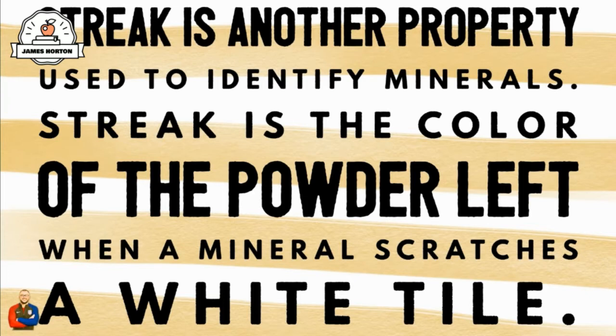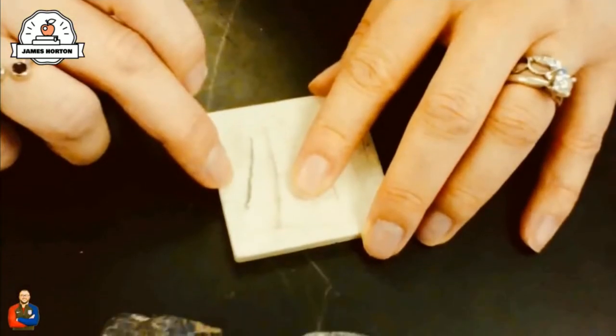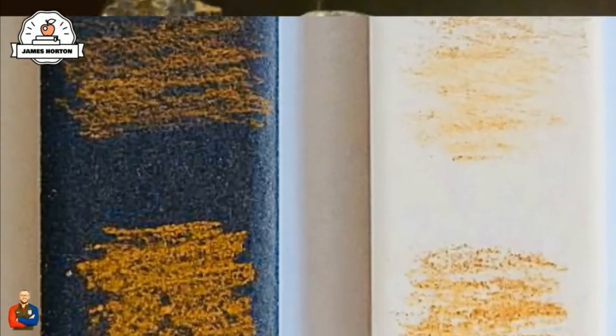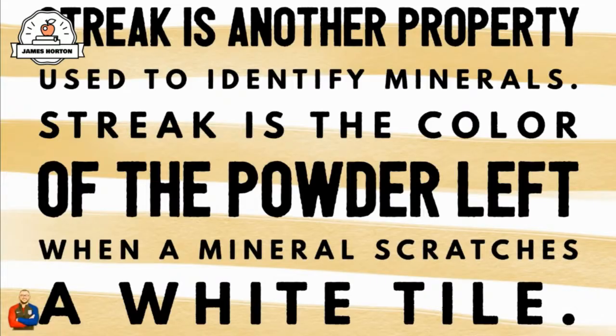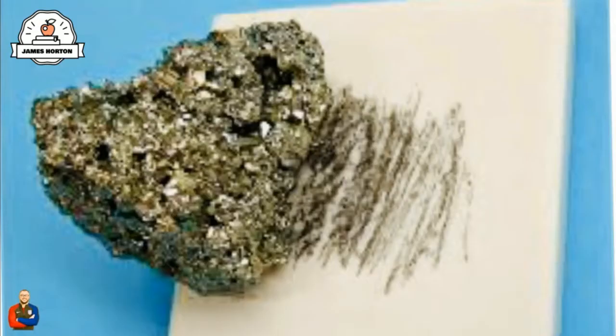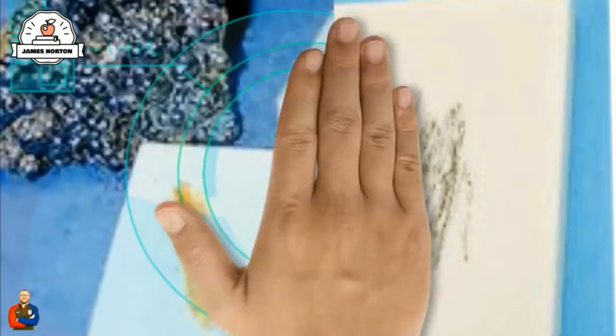Streak is another property that is used to identify minerals. Streak is the color of the powder or residue that is left when a mineral is rubbed or scrubbed across a white tile. You need to know that a mineral's streak is not always the same color as the mineral itself.